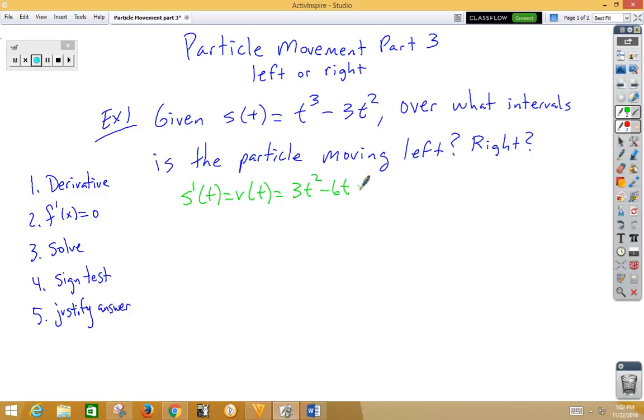Second step is to set that equal to zero. Third step would be to solve that. So let's factor this thing. Pull out a 3t. Inside, we get a t minus 2. So either 3t is zero or t minus 2 is zero. So t is zero or t is two.